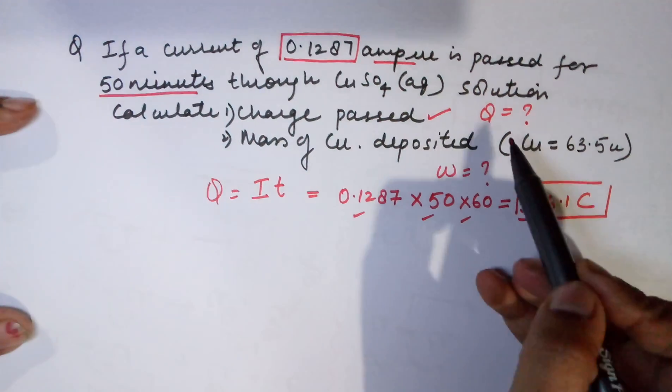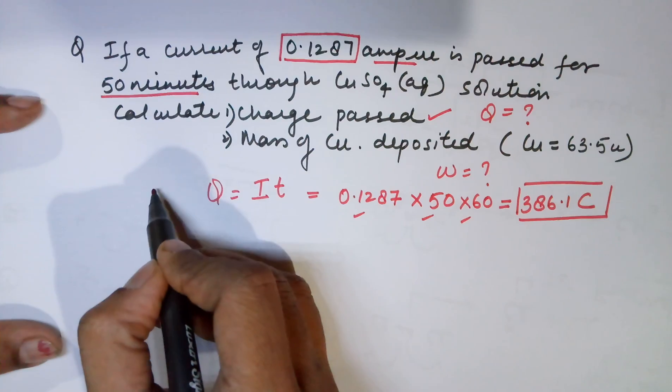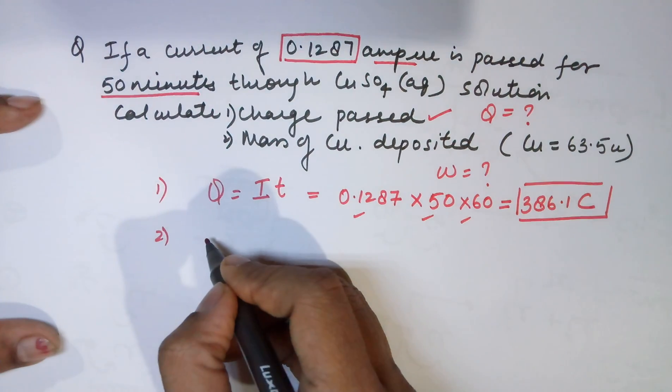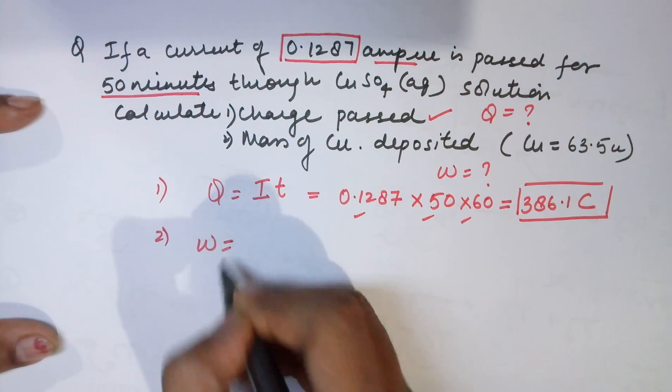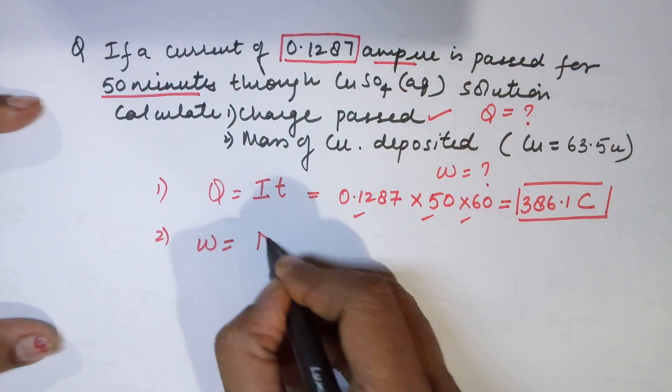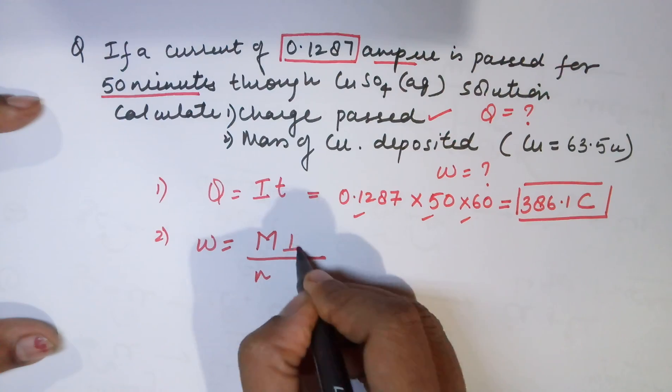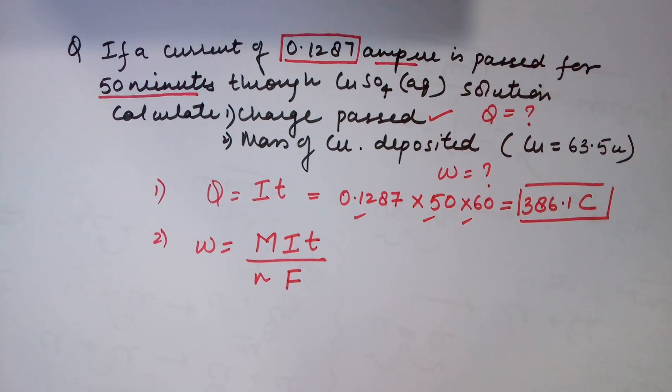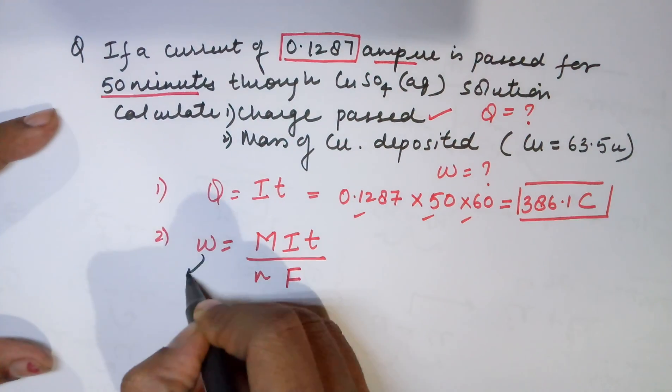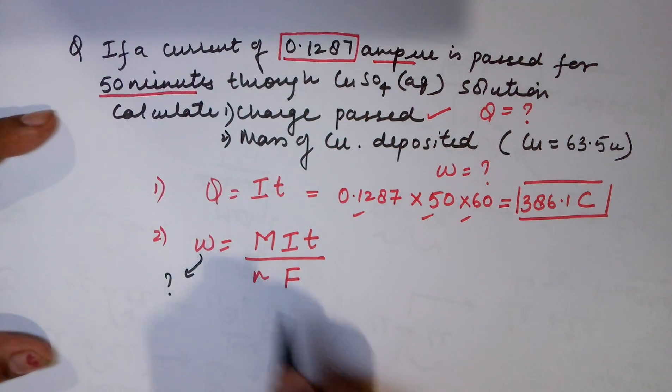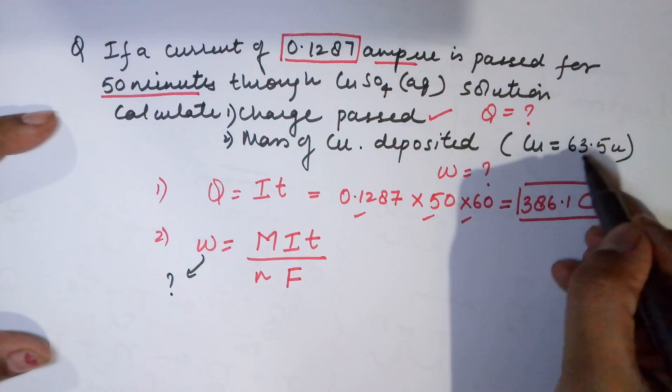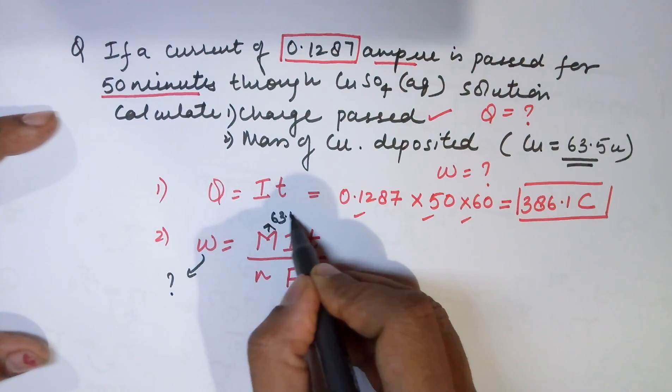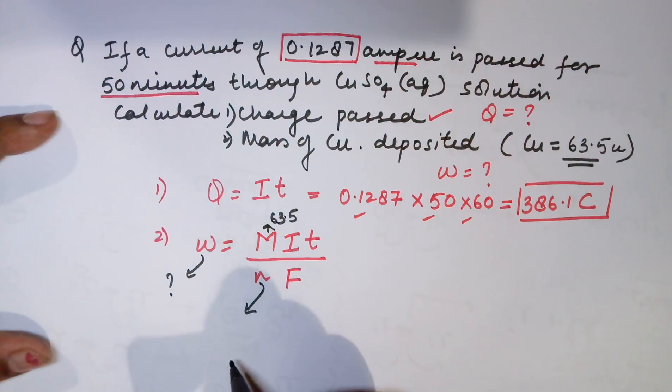The second part of the question is: you require the mass of copper deposited. Let us substitute the values from the first law of Faraday. The weight deposited is given by equivalent weight × I × T ÷ Faraday's. Substituting my values, you require weight deposited. You require the atomic mass. Atomic mass of copper is 63.5.